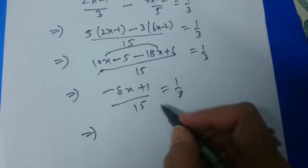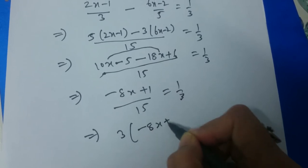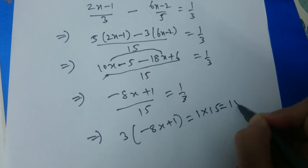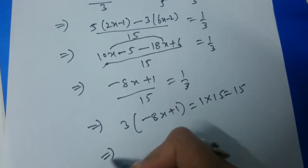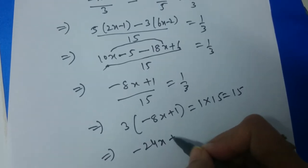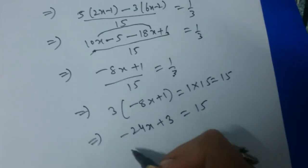This implies now cross multiply: we have 3 into minus 8x plus 1 is equal to 1 into 15 which is 15. Simplify this: 3 into minus 8x is minus 24x, plus 3 into 1 that is 3, is equal to 15.